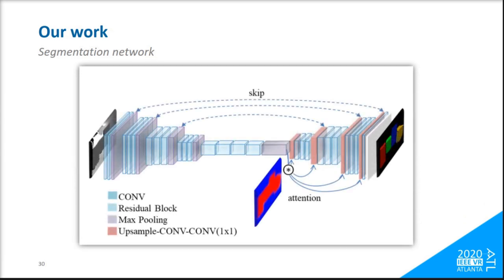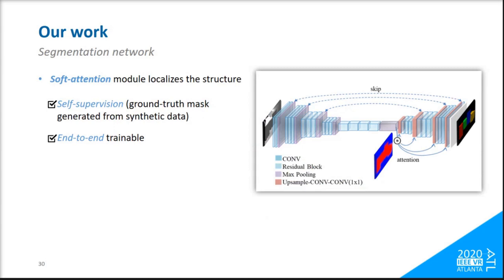For our model, we use a UNET-like deep convolutional network with skip connections, and a self-attention mechanism to speed up the convergence of the network, which is guided by the ground-truth mask produced at the data generation step.